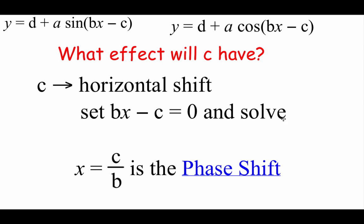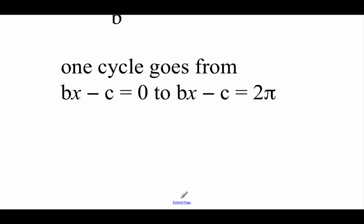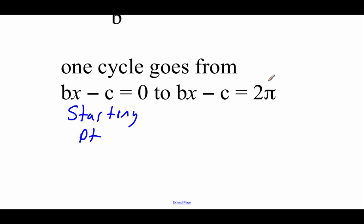When we look at these phase shifts, what's really happening is we're changing where our graph starts and where it ends. One cycle of our graph is going to go from Bx minus C equals 0 — that's the starting point — and for the ending point, we take that Bx minus C and set it equal to 2π.